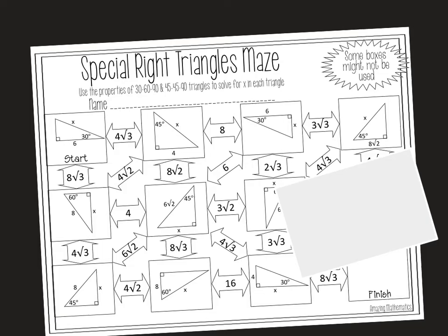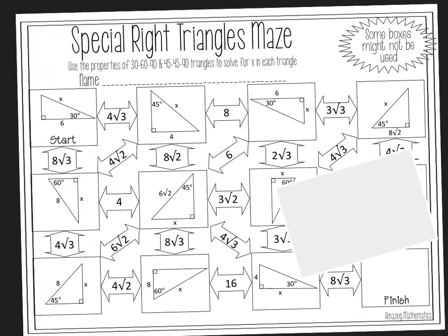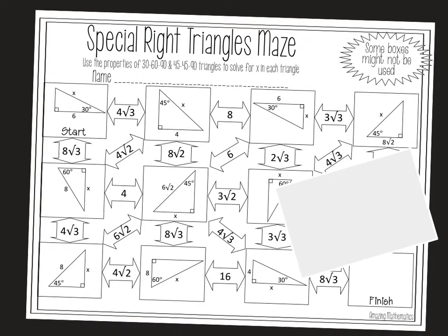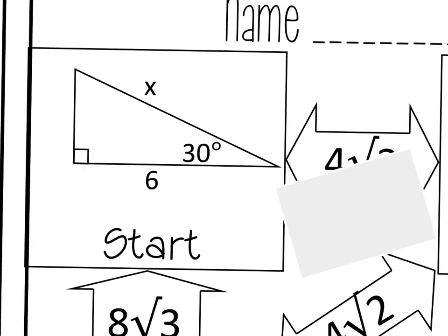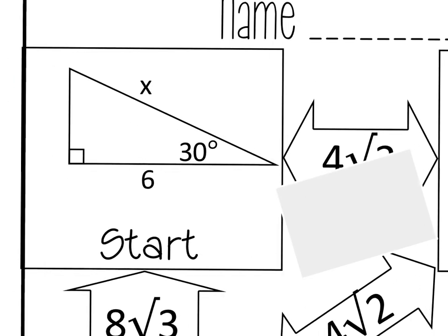I'm going to help you guys get going on this special right triangles maze. So once you print this out, or if you don't have a printer, you can just use a piece of paper, then we're going to find the start in this first square on the top left.